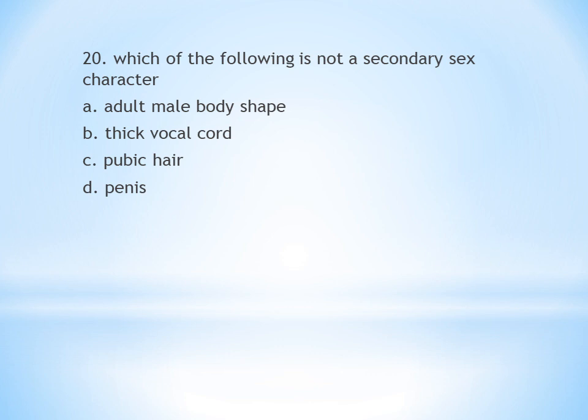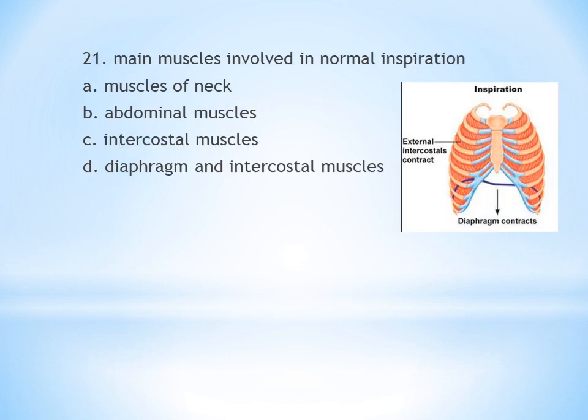Question on secondary sexual characteristics. Which of the following is NOT a secondary sexual character? A. Adult male body shape. B. Thick vocal cord. C. Pubic hair. D. Penis. Adult male body shape, thick vocal cord, and pubic hair are all secondary sexual characteristics. The penis is a primary sexual organ, not a secondary sexual character. So the answer is D, penis.